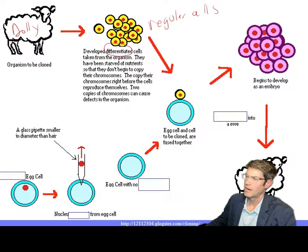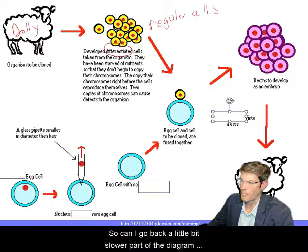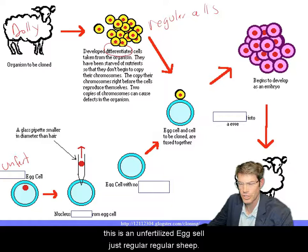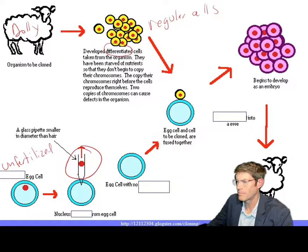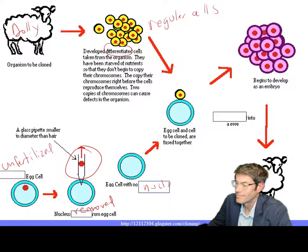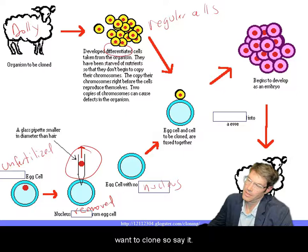They took cells from the underside of Dolly's belly. You take out the nucleus from that differentiated cell and put it into an egg that's had its own nucleus removed. Looking at the lower part of the diagram — this is an unfertilized sheep egg cell. You bring in a needle, remove the nucleus, and now you have an egg cell with no nucleus.